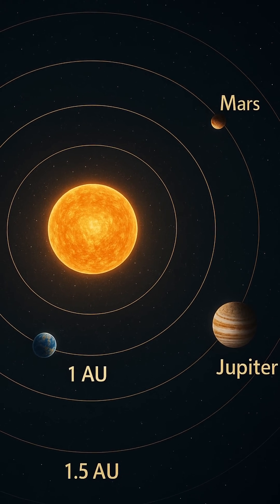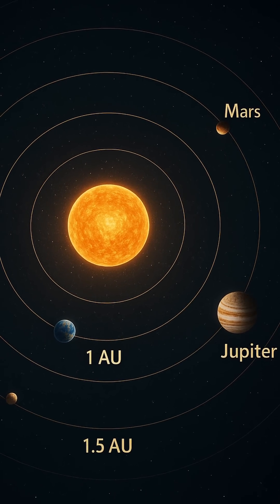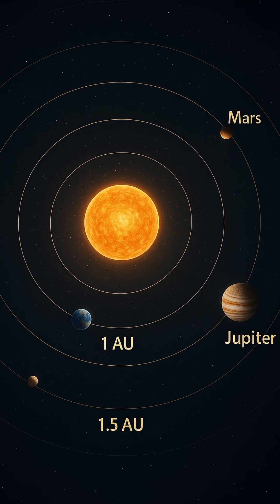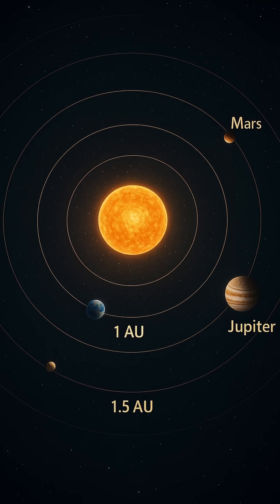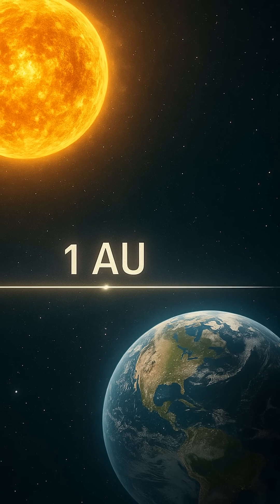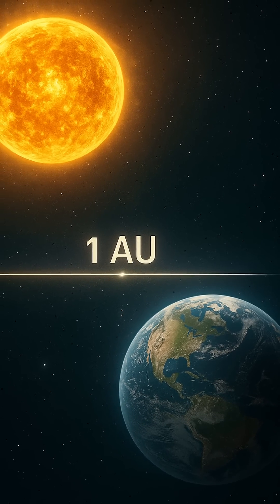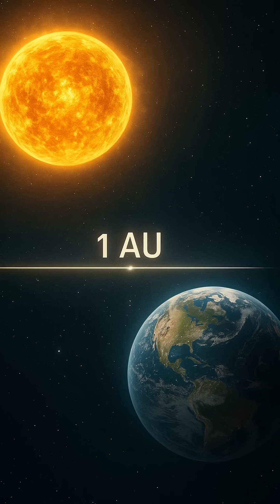In the vastness of space, where distances stretch far beyond human comprehension, astronomers needed a simple yet consistent way to measure the immense gaps between celestial objects. That's where the concept of an astronomical unit, commonly known as the AU, comes into play.